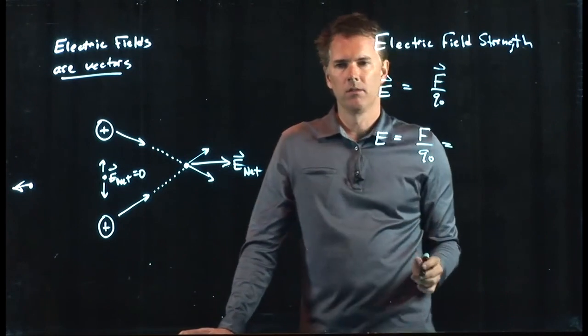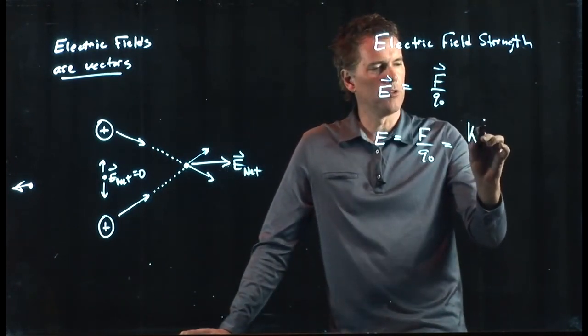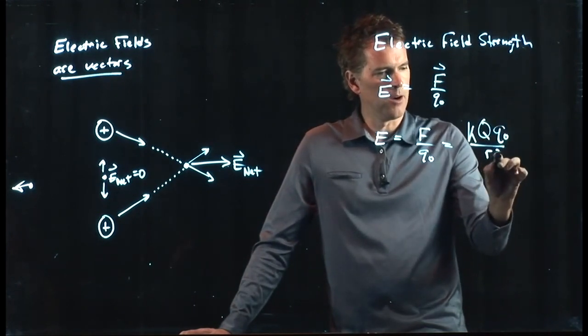And here, F is Coulomb's law. So it is K times Q times Q naught divided by R squared.